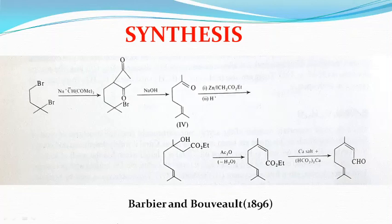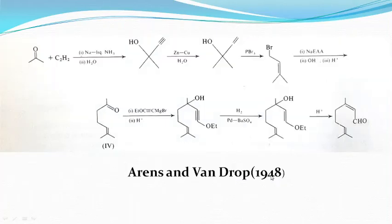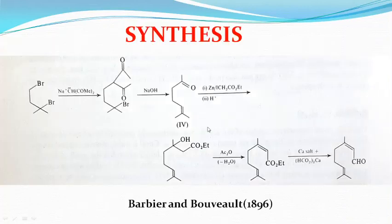The structure of citral was finally confirmed by its synthesis, given by Barbier and Tiemann. They converted methyl heptanone into geranic ester using the Reformatsky reaction. After this, Tiemann converted geranic ester into citral by distilling a mixture of calcium salts of geranic and formic acids.